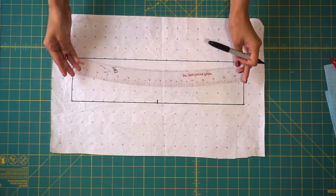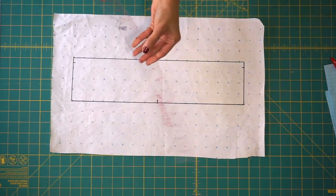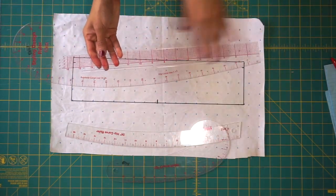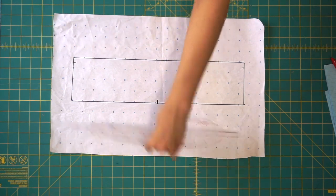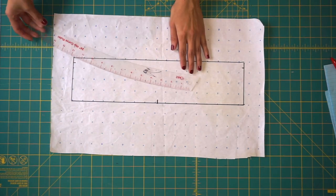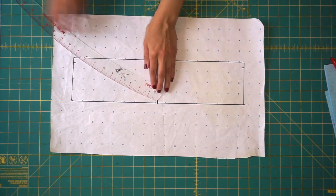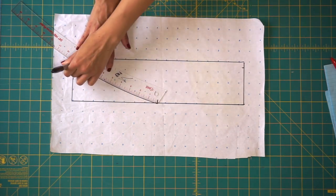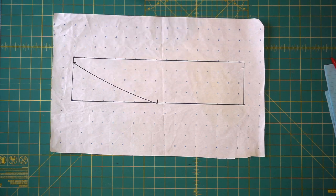Next grab a curved ruler - you can grab a hip curved ruler, a design ruler, any kind of curved ruler that you have handy in your stash. From the center line, you're going to make a curve down to that half inch marking that you just made. Make a curved line and repeat that to the opposite side as well.